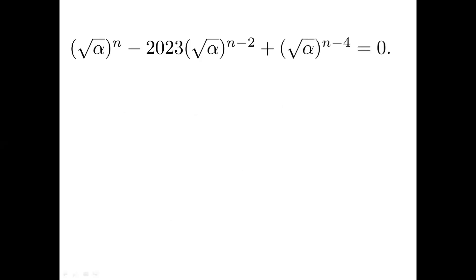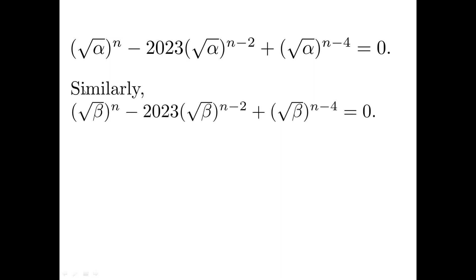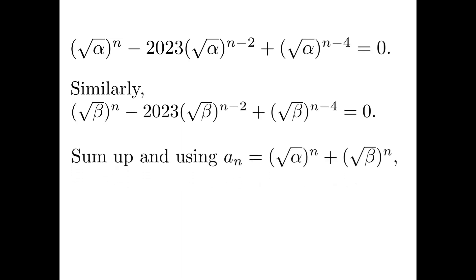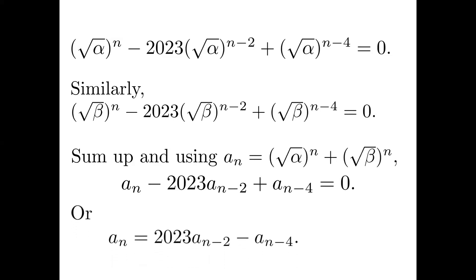As a matter of fact, both the square root of alpha and the square root of beta are roots of the quartic equation x to the power 4 minus 2023x squared plus 1 equals 0. Multiplying through by x to the power n minus 4, we get the square root of alpha to the power n minus 2023 times the square root of alpha to the power n minus 2, plus the square root of alpha to the power n minus 4, equals 0. Similarly, we establish the same equality for the square root of beta. Summing up and using the definition of A of n, we get A of n minus 2023 times A of n minus 2 plus A of n minus 4 equals 0.